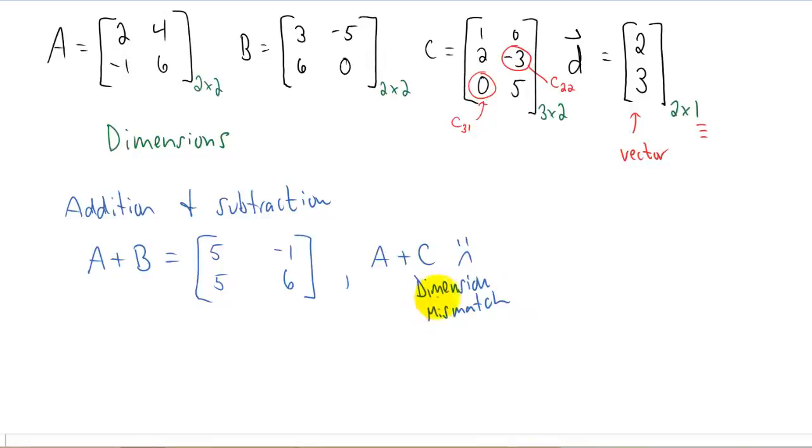The second thing that we can do with matrices is we can multiply them by scalars. The scalars are things that aren't vectors or matrices. They're just basically numbers or functions. So we can take D for example and multiply it by 5 and it's pretty easy. You do exactly what you think you would do. You just multiply each element in vector D by 5.